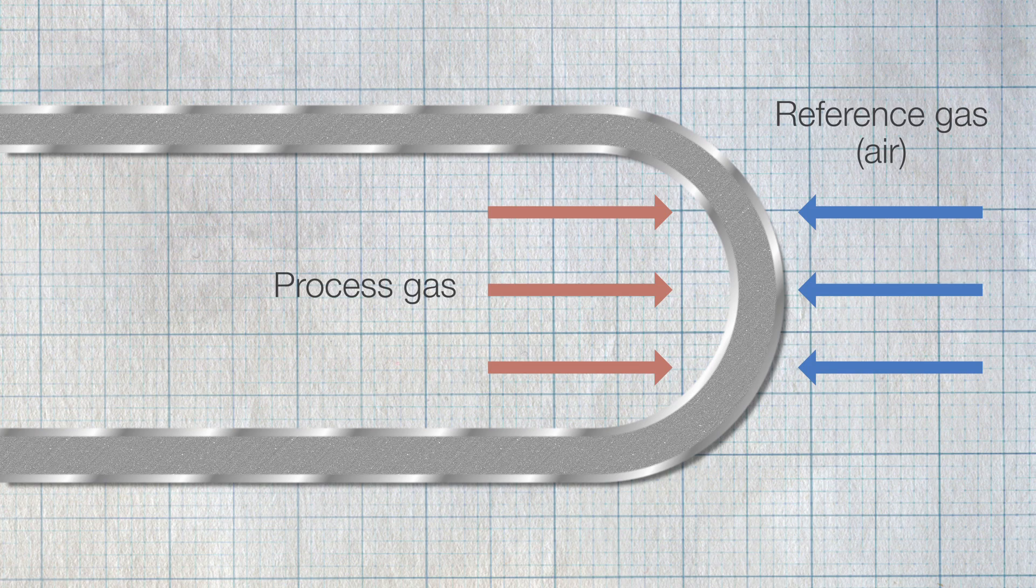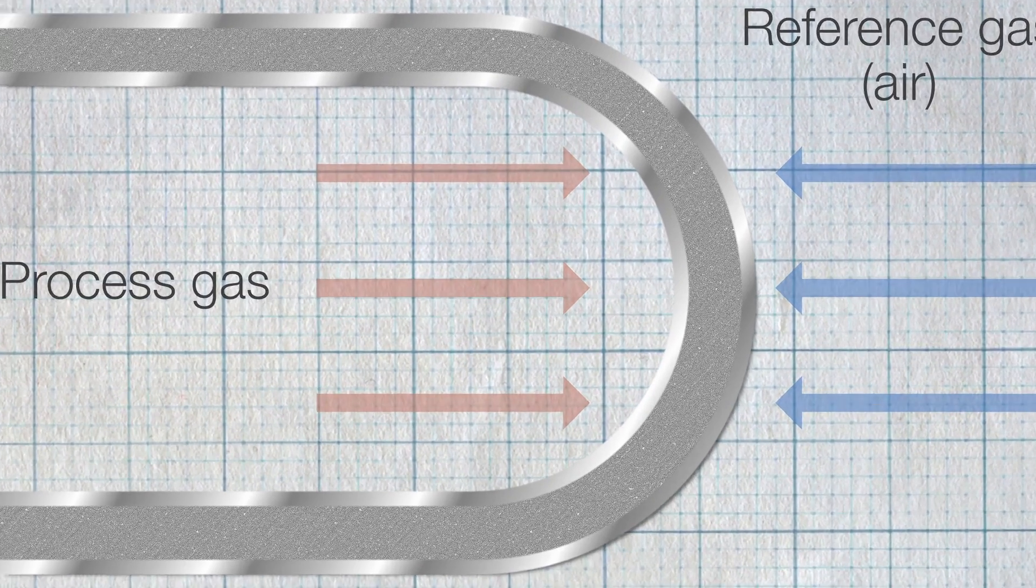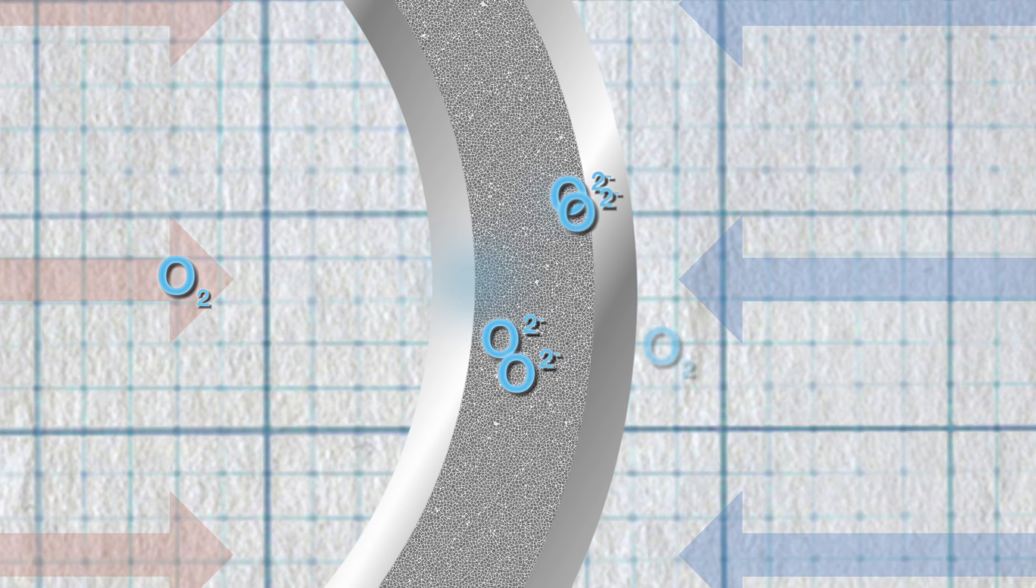When the concentration of oxygen is equal on each side, migration of the oxygen ions through the zirconium is zero. When concentrations differ, migration of the oxygen ions will increase as they try to re-establish equilibrium.